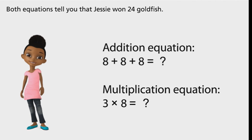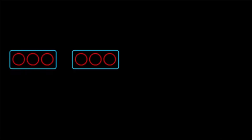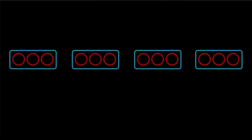Both equations tell you that Jesse won 24 goldfish. Multiplication is an operation involving equal groups. We can use representations to see how equal groups in multiplication are the same as repeated addition. Here you can see six groups of three. Because the groups are equal, we can use multiplication to figure out the total.